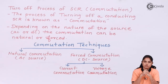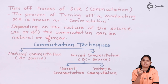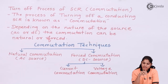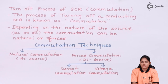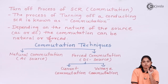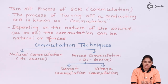In forced commutation, whenever we are using a DC source, it is difficult to turn off the SCR, so we have to go for forced commutation — forcibly, using an external device or external circuit, turning off the SCR. This mechanism can be either current commutation or voltage commutation. If you reduce the anode-to-cathode current below holding current, the SCR will be turned off. The second criteria is that if you provide a negative voltage — that is, if VAK is reverse biased — then the SCR will also be turned off.